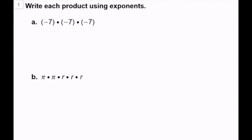The instructions say write each product using exponents. Here we see that we have three different negative 7s being multiplied. So I know that since negative 7 is the number that's being repeatedly multiplied, my base is negative 7, so I'm going to write it as negative 7 in parentheses. Because it's being multiplied three times, we're going to put 3 as our exponent. So this is our final answer: negative 7 to the third power.